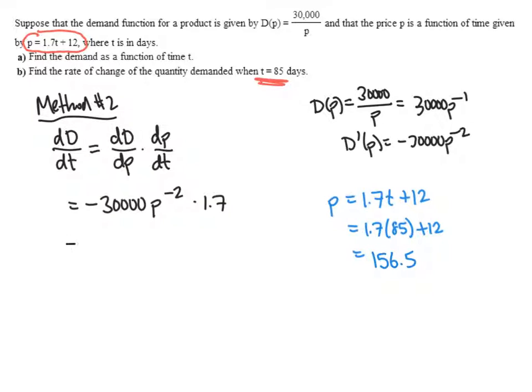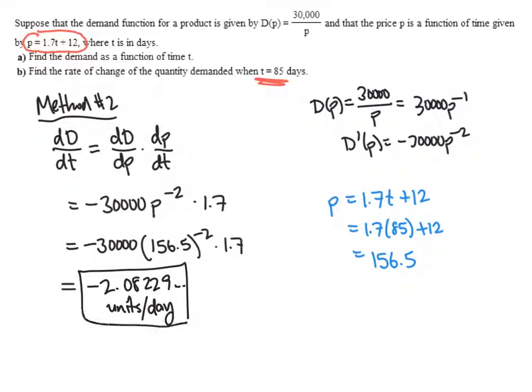So now we plug that in for the p in our derivative formula, negative 30,000 times 156.5 to the negative 2 times 1.7. And that gives us the same answer that we got before, which is negative 2.08229. And again, the units are units per day.